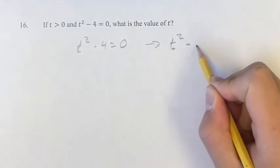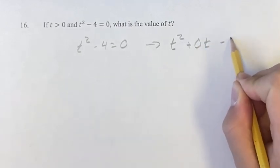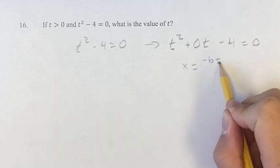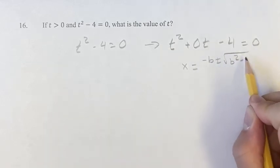where we have t squared plus 0t minus 4 is equal to 0, and then you can use the quadratic formula and plug in your values for a, b, and c,